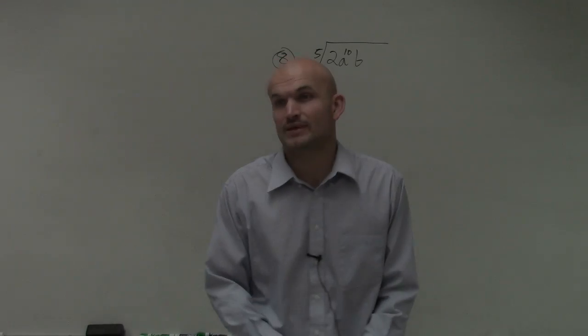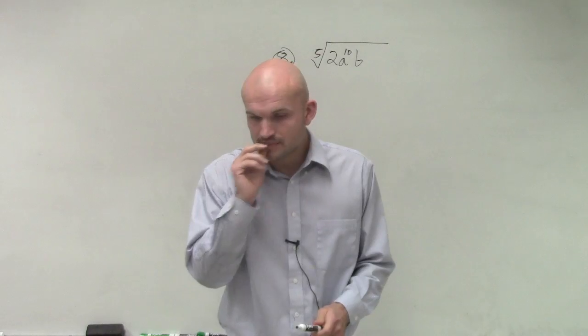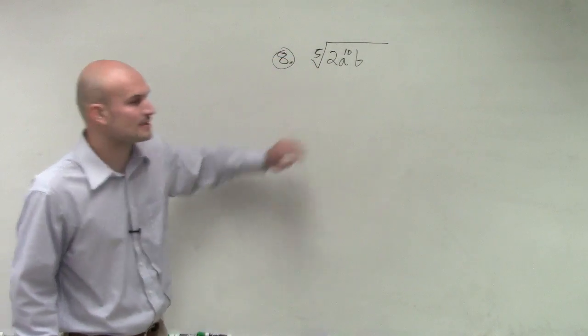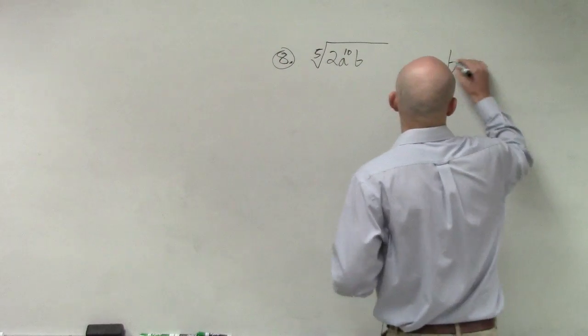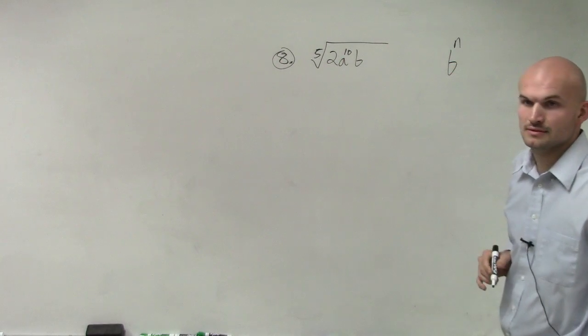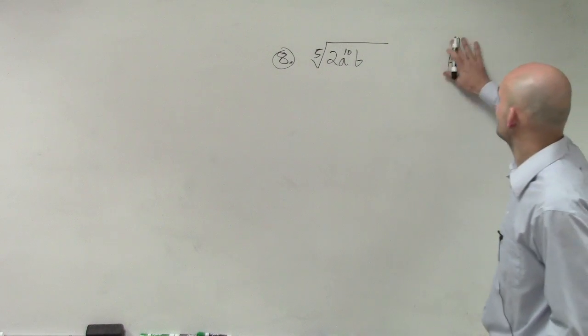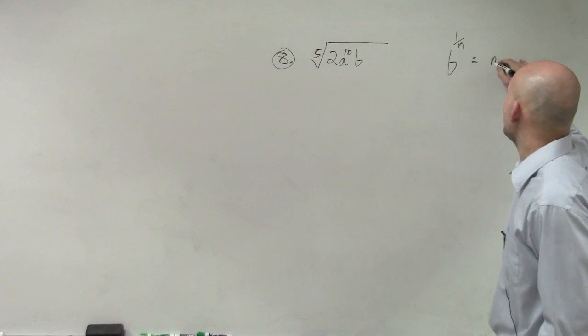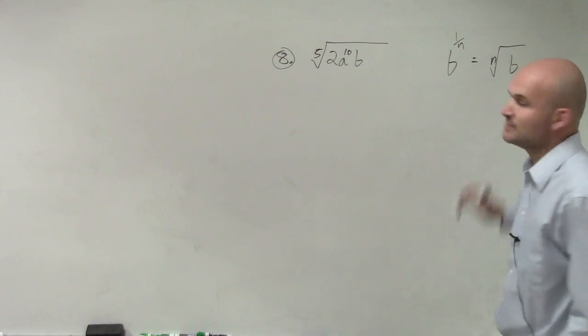There's a couple rules that we need to follow with this. The first rule is remember that if we have b to the 1 over n, that's equal to the nth root of b.